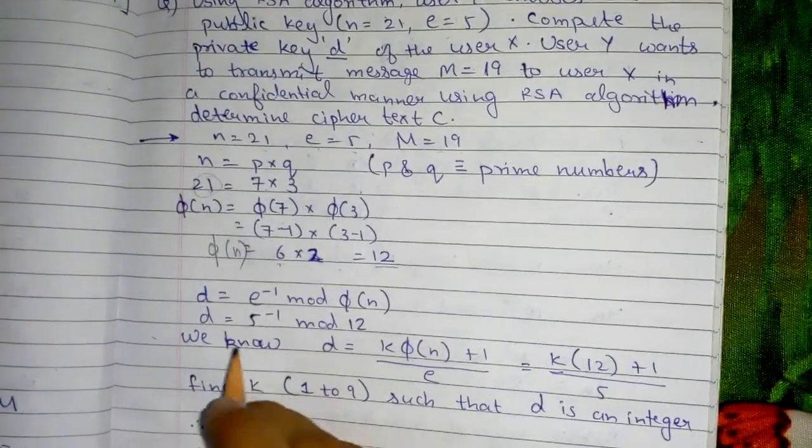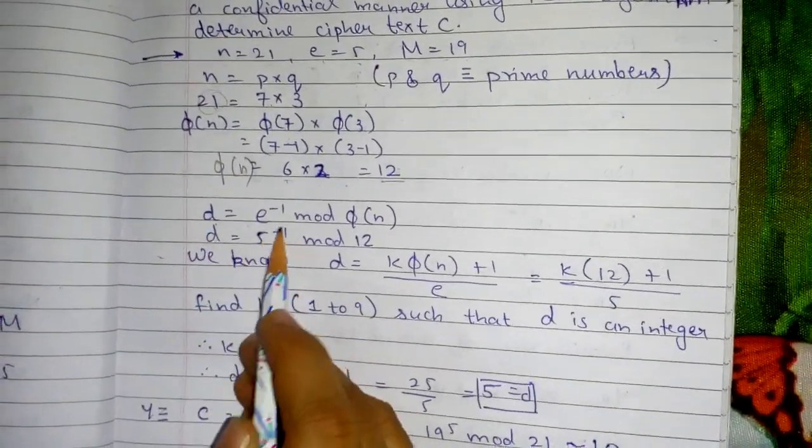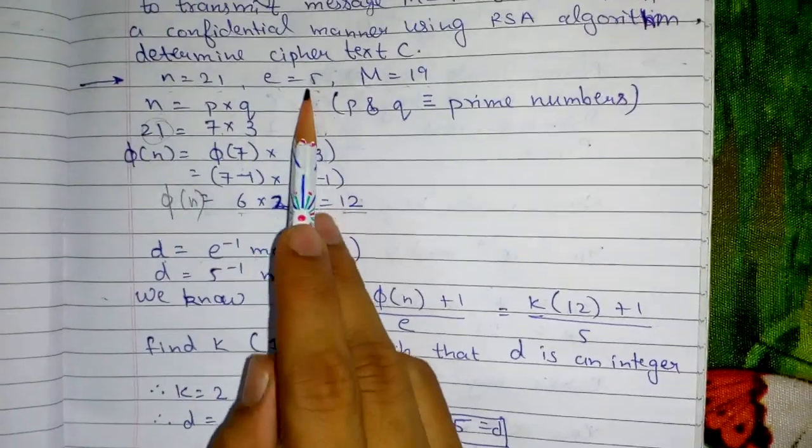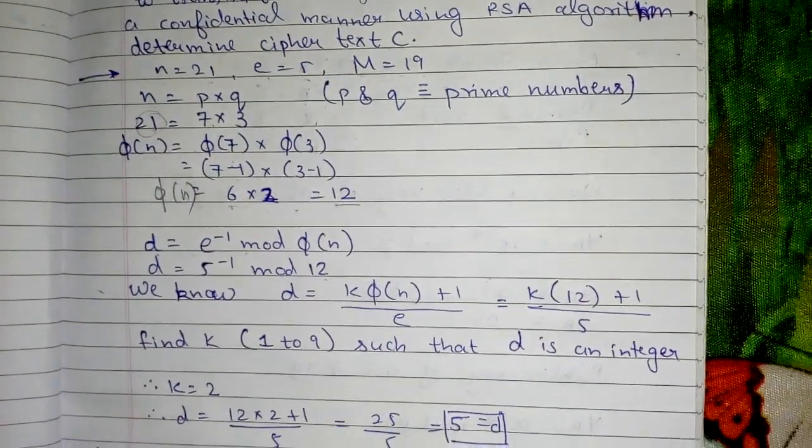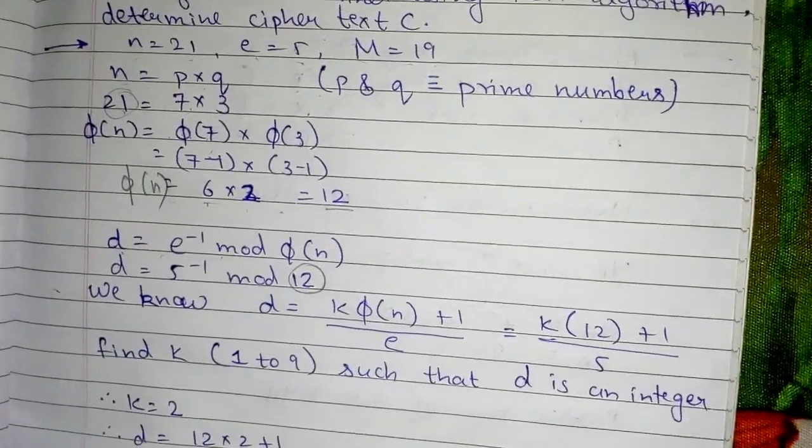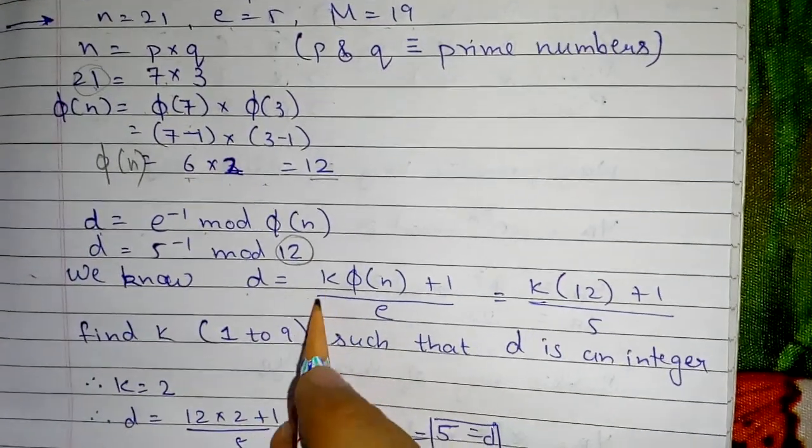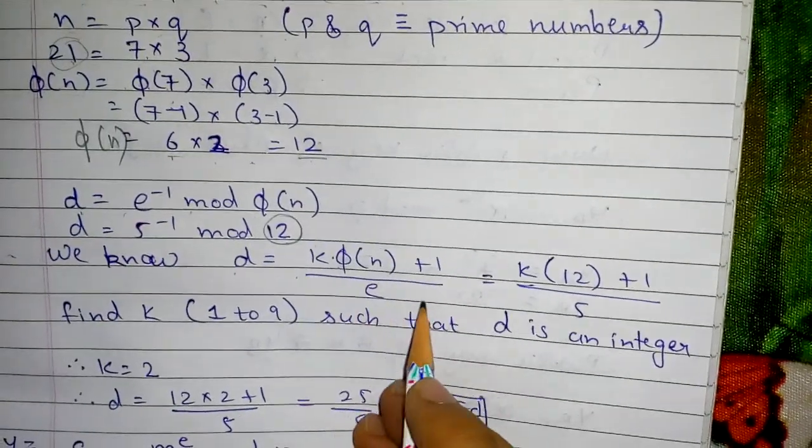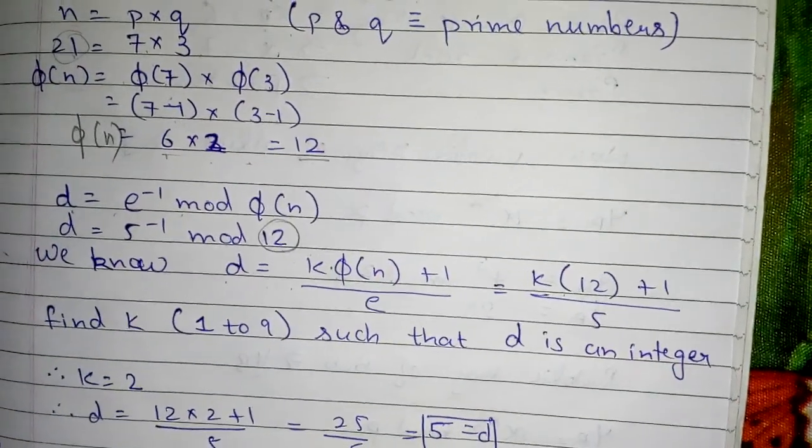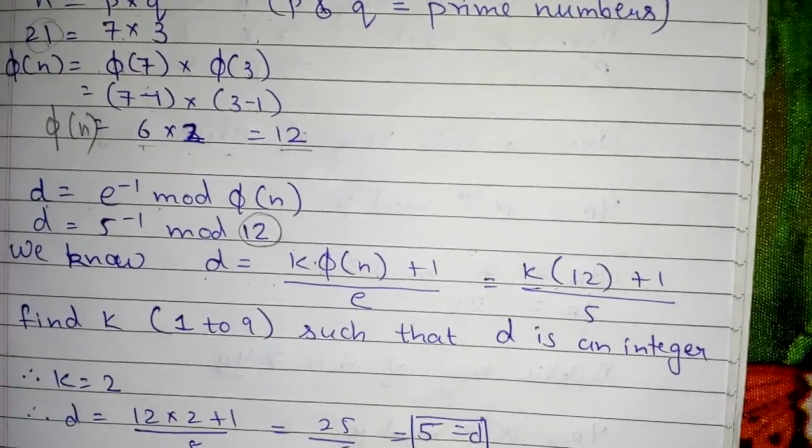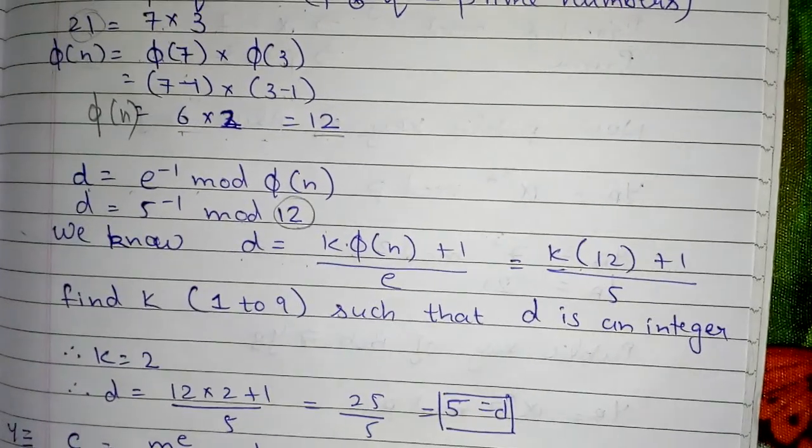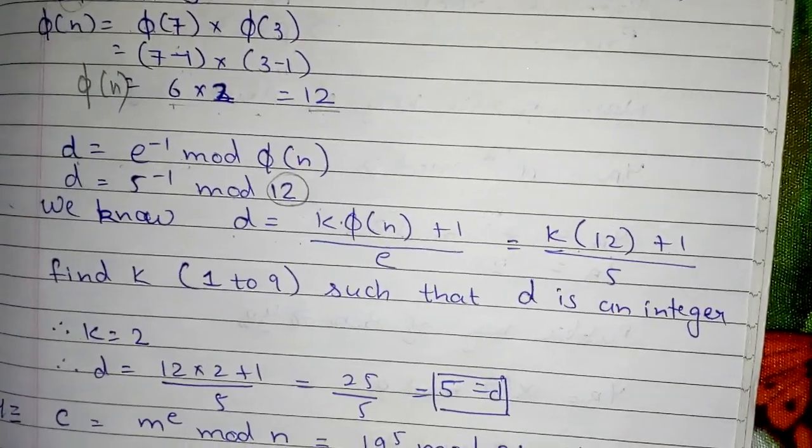Now D = E^(-1) mod φ(n). E is given as 5, so we need 5^(-1) mod 12. We use the formula D = (K×φ(n)+1)/E. Here φ(n)=12, so D = (K×12+1)/5. K is a value between 1 to 9, and we need to find a K such that D is an integer without any decimal point.